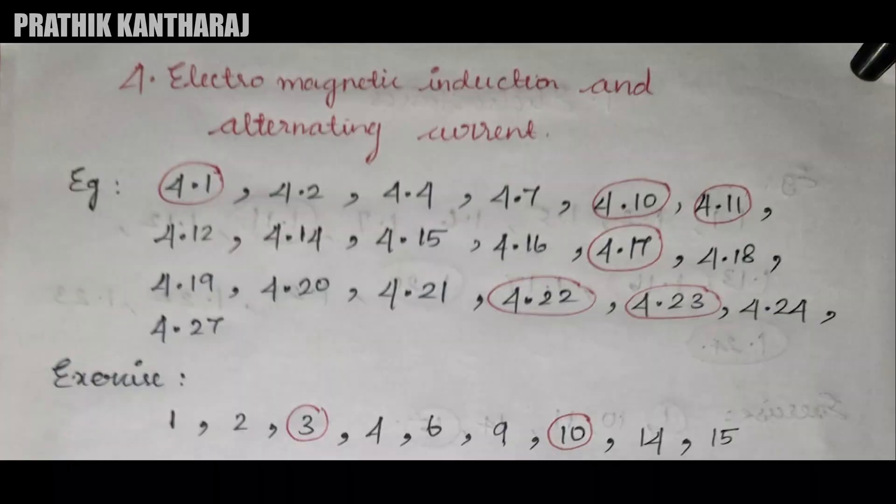Fourth chapter examples: 4.1, 2, 4, 7, 1.1, 1.1, 1.4, 1.5, 1.6, 1.7, 1.8, 1.9, up to 4.24 — that continues all the way to 4.27. In the exercise: 1, 2, 3, 4, 6, 9, 10, 14, and 15.